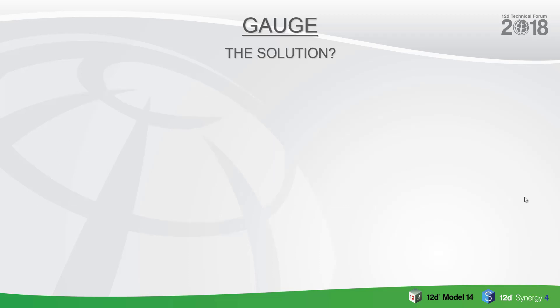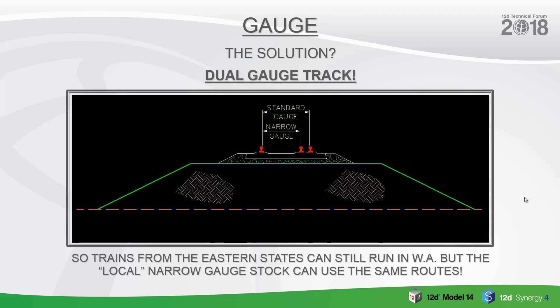So what's the solution to this? Dual gauge track. The idea here, as you can see from the image, is that on each sleeper you have three rails. One rail is used commonly for both narrow gauge and standard gauge. That allows trains from the eastern states to run right the way through to Perth in WA, but the local narrow gauge stock can still use the same routes. This isn't only done in Western Australia — that was just an example.